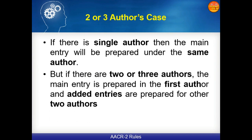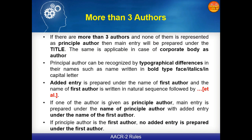Let us take the example of author cases. If there is a single author, the main entry is prepared under that author. If there are two or three authors, the main entry is prepared under the first author's name, and added entries are prepared for the other authors. If there is a case of more than three authors and none of them is represented as the principal author, the main entry will be prepared under the title. The same is applicable in the case of a corporate body as author.